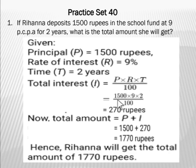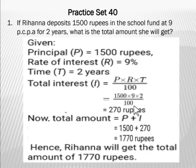The principal is 1500, rate is 9% per annum, and time is 2 years. Looking at the expression 1500 × 9 × 2 ÷ 100: two zeros of 1500 cancel with the two zeros of 100. We are left with 15 × 9 × 2 in the numerator, and the denominator becomes 1.